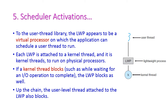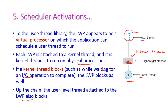In this diagram, a user thread runs on the kernel using a lightweight process, which acts as a virtual processor. Each lightweight process is assigned to a separate kernel thread so the process can execute on the physical processor. If the kernel thread blocks — waiting for an I/O operation to complete — then the lightweight process is also blocked, which automatically blocks the user-level thread as well. This is scheduler activation.